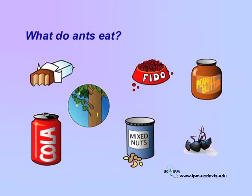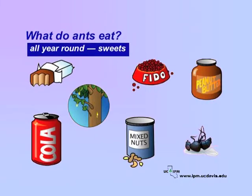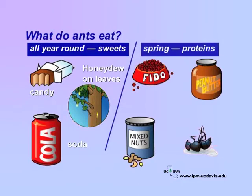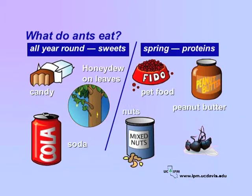Food availability drives what ants do and where they go. Throughout the year, Argentine ants search for sweets such as candy, cough drops, and sodas, or, if outdoors, honeydew produced by aphids, scales, and whiteflies on leaves. During the spring, when queens lay eggs, workers may prefer to search for proteins to feed the developing colony. However, they may also feed on proteins during other times of the year. Examples include pet food, peanut butter, nuts, seeds, and dead insects. Food preferences vary somewhat among ant species.